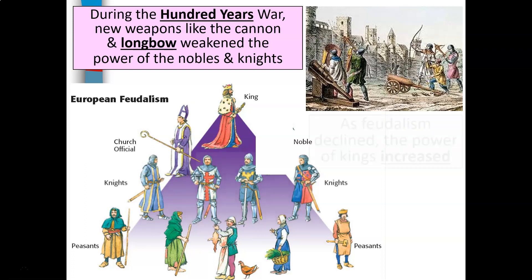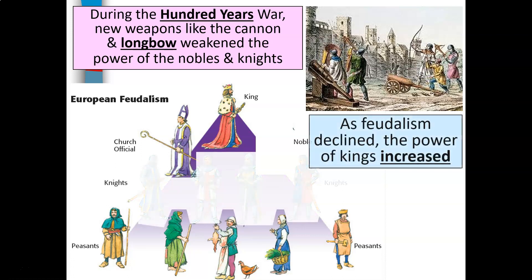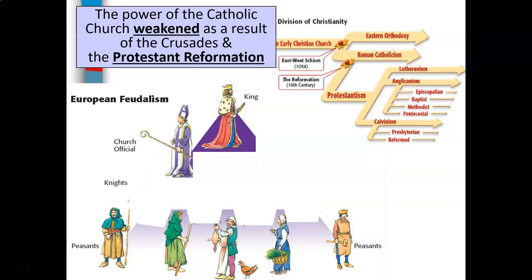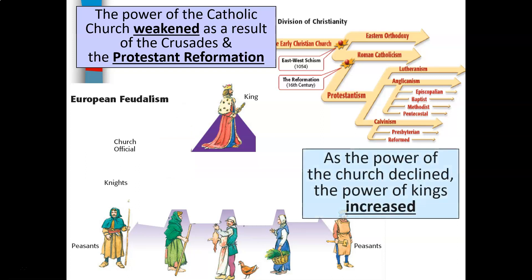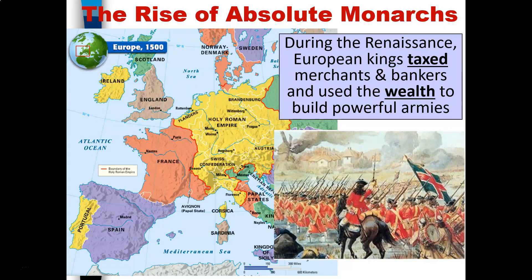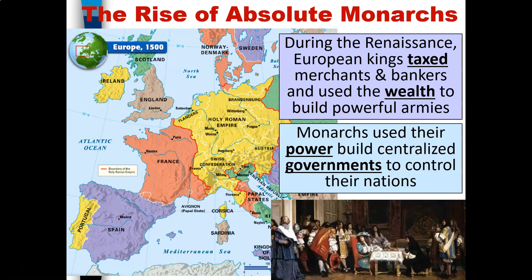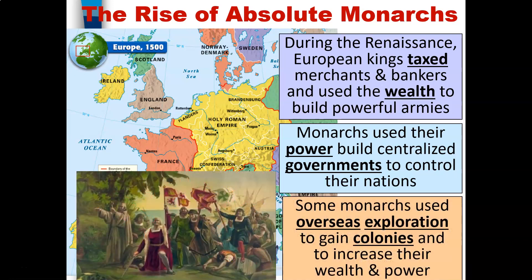As feudalism declined, the power of kings increased dramatically. The power of the Catholic Church was weakened as a result of the Crusades and the Protestant Reformation, and as the power of the church declined, the power of kings increased. During the Renaissance, kings taxed merchants and bankers and used the money they collected to build powerful armies. Monarchs used their power to build centralized governments to control their nations and the people within them.